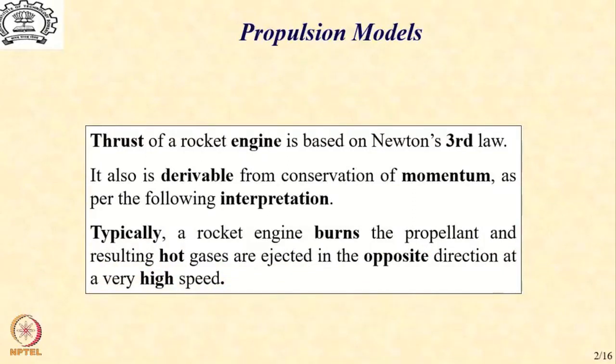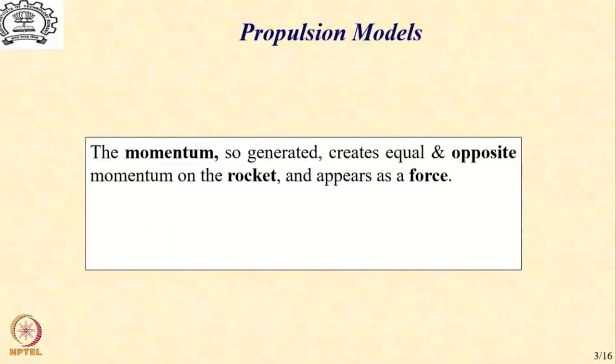Let us create a scenario which says that a rocket engine burns the propellant and resulting hot gases are ejected in the opposite direction at a very high speed. The momentum so generated creates equal and opposite momentum on the rocket so that the net momentum remains constant. The momentum lost due to the exhaust gases appears in the form of momentum gained by the rocket or as a force on the rocket.